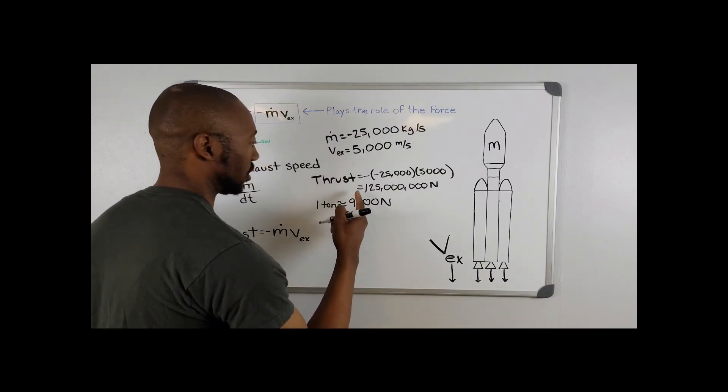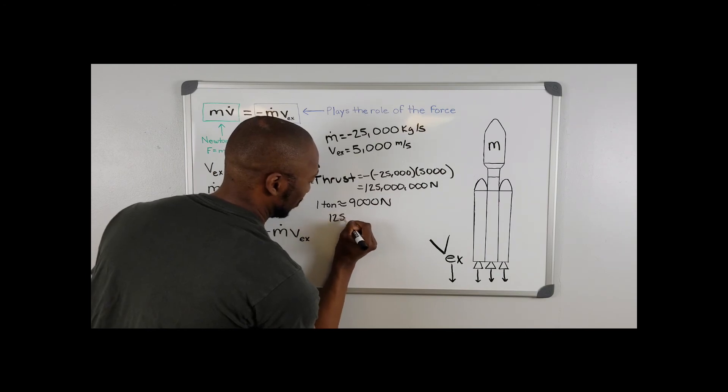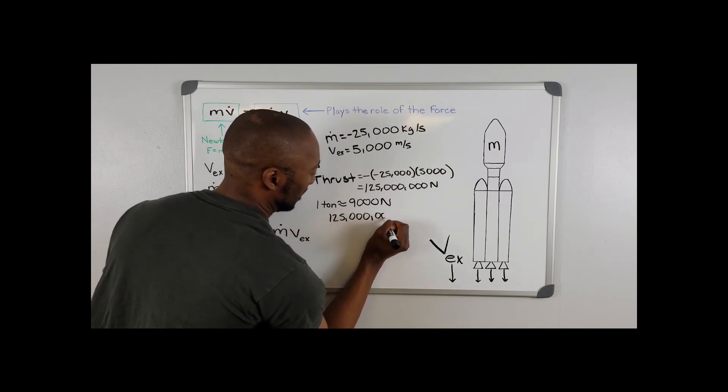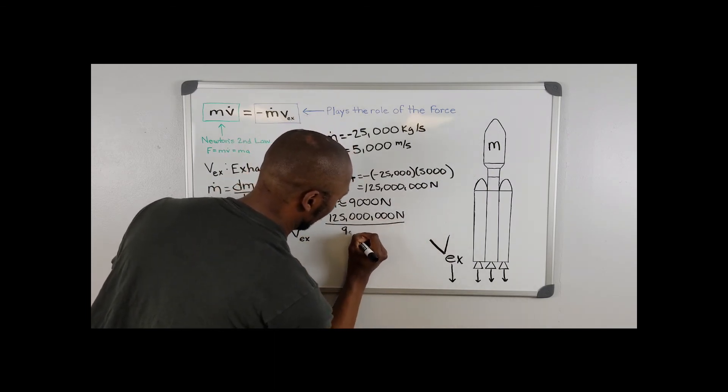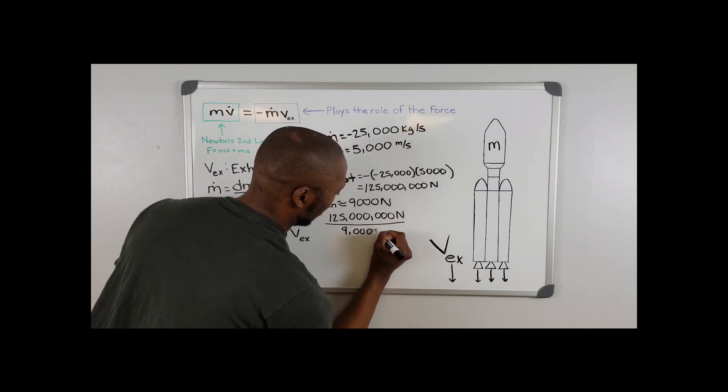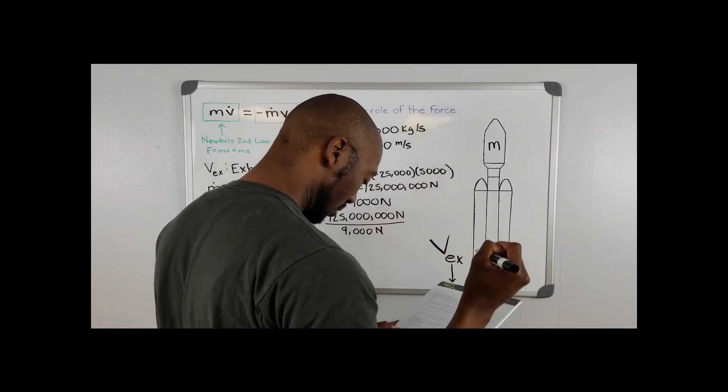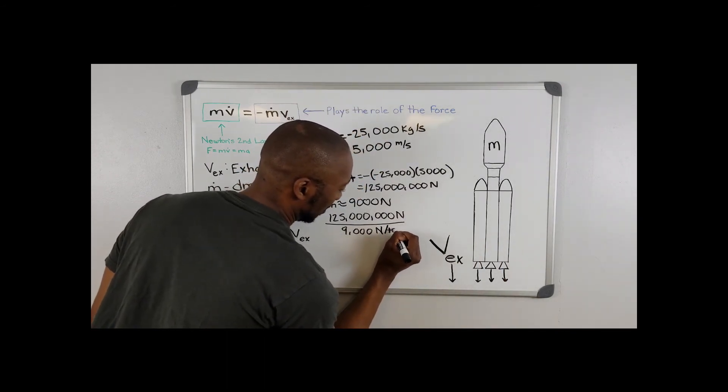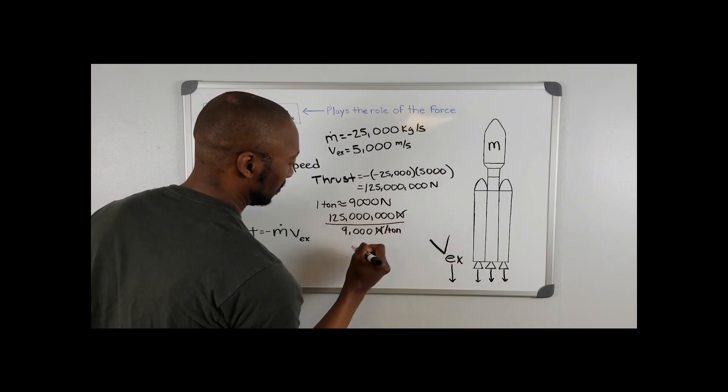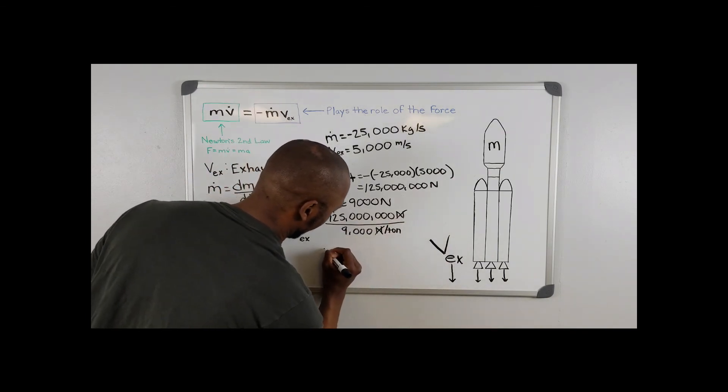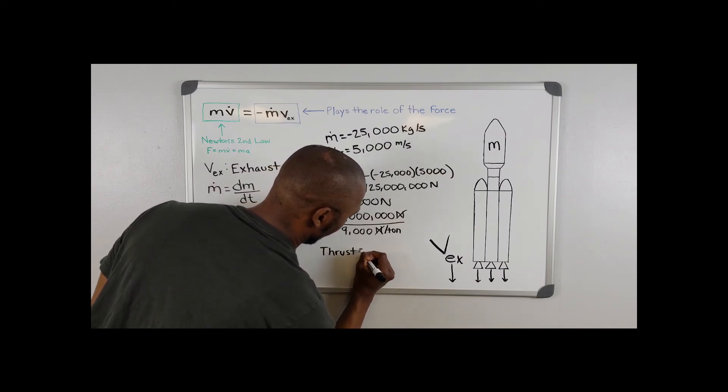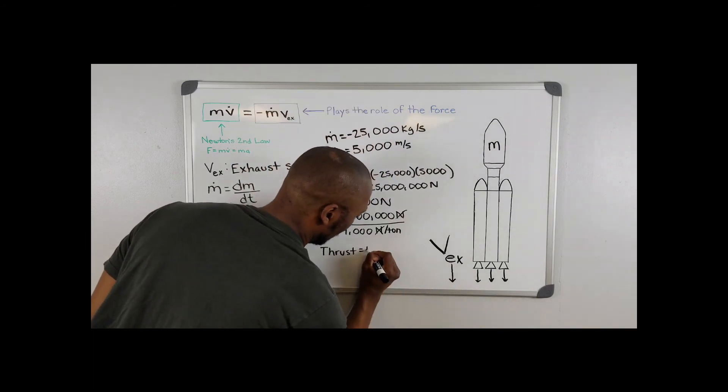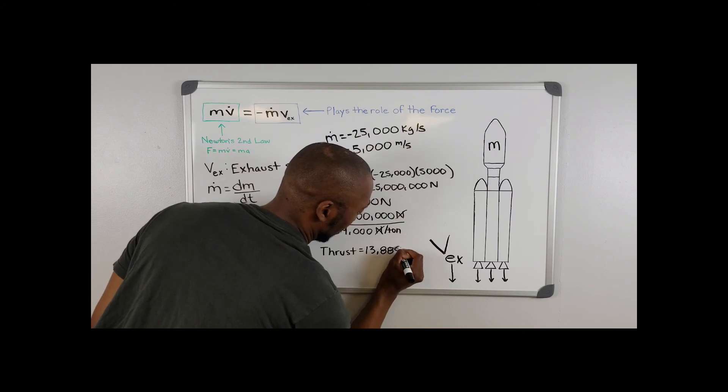And so we're going to just go ahead and divide our 125 million newtons over 9,000 newtons per ton. The newtons cancel out, and what we will get is a thrust that equals 13,888 tons.